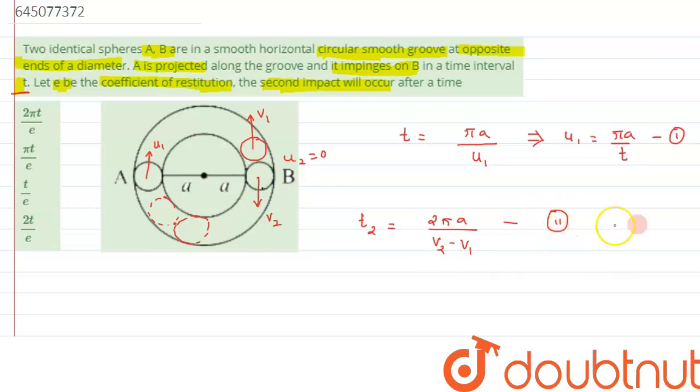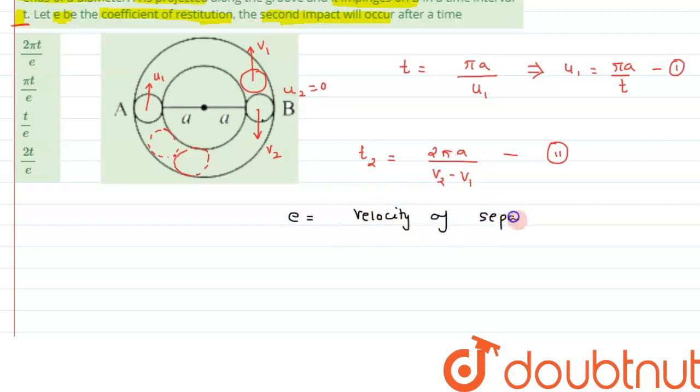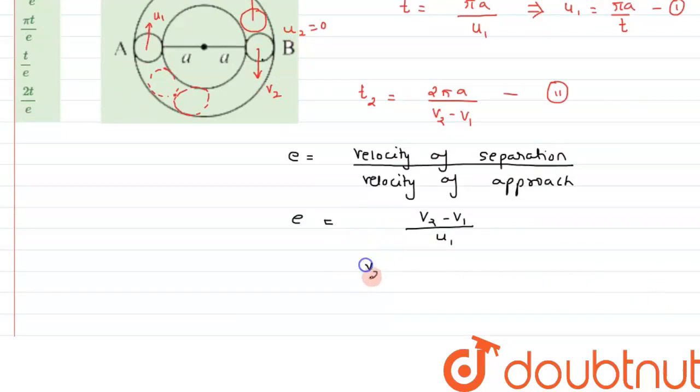It's been given in the question about the coefficient of restitution e. Coefficient of restitution is the ratio of velocity of separation to velocity of approach. The velocity of separation is v₂ minus v₁, and velocity of approach was u₁. From here we can say v₂ minus v₁ equals e·u₁.